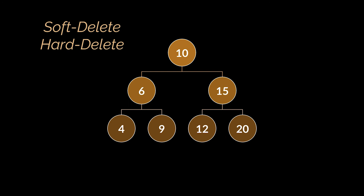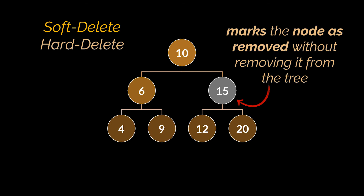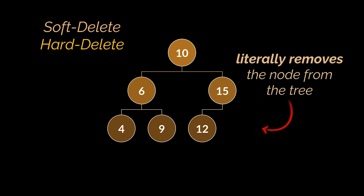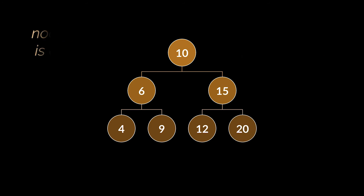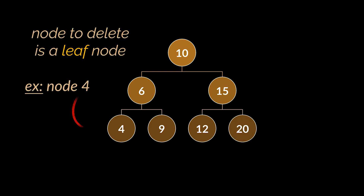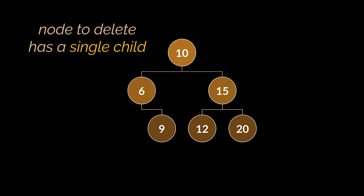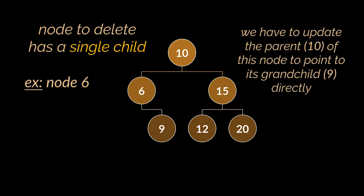Next is the delete operation, and we actually have two types of delete: the soft delete and hard delete. The soft delete marks the node as removed but does not actually remove it from the tree. The hard delete goes ahead and literally removes the node from the tree. However, while doing this, we may encounter three cases or three types of nodes. The first one is if the node we want to delete is a leaf node — all we have to do is make its parent point to null. The second case is if the node we want removed has a single child. Then we have to update the parent of this node to point to its grandchild directly. In this example, we removed node 6, and in order not to lose the information stored in its child, we made the parent of 6 — which is 10 — point to the child of 6, which is 9.